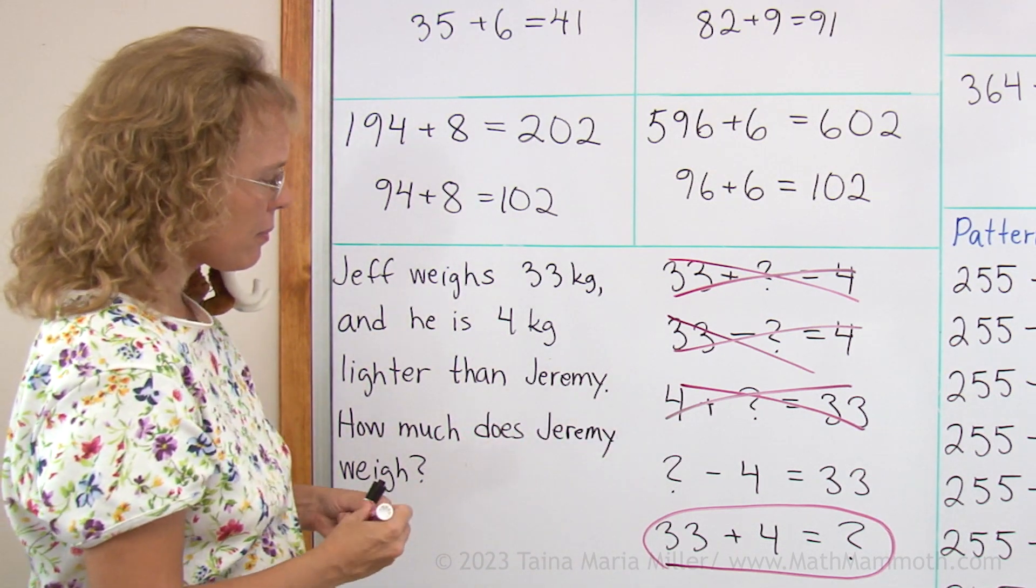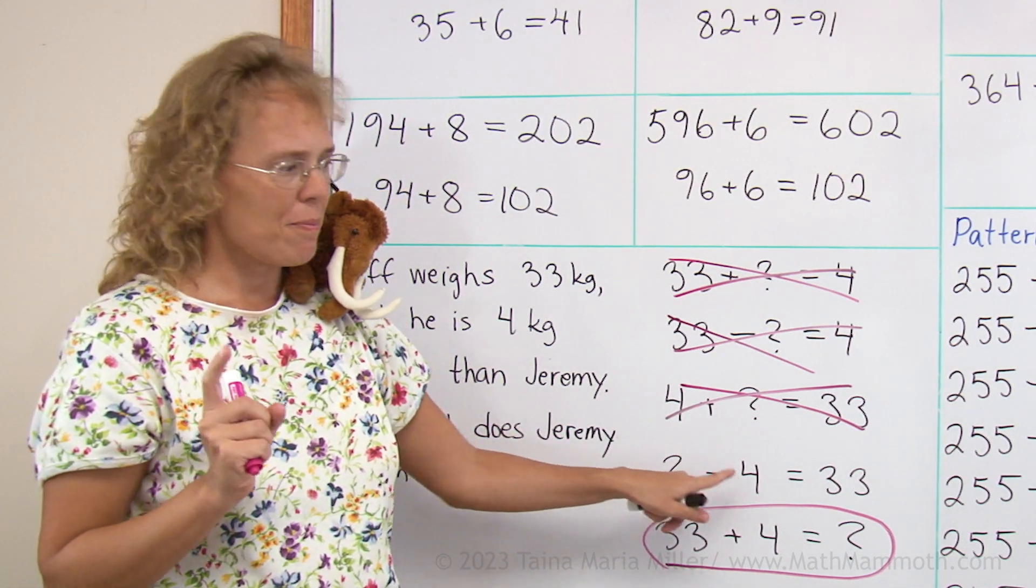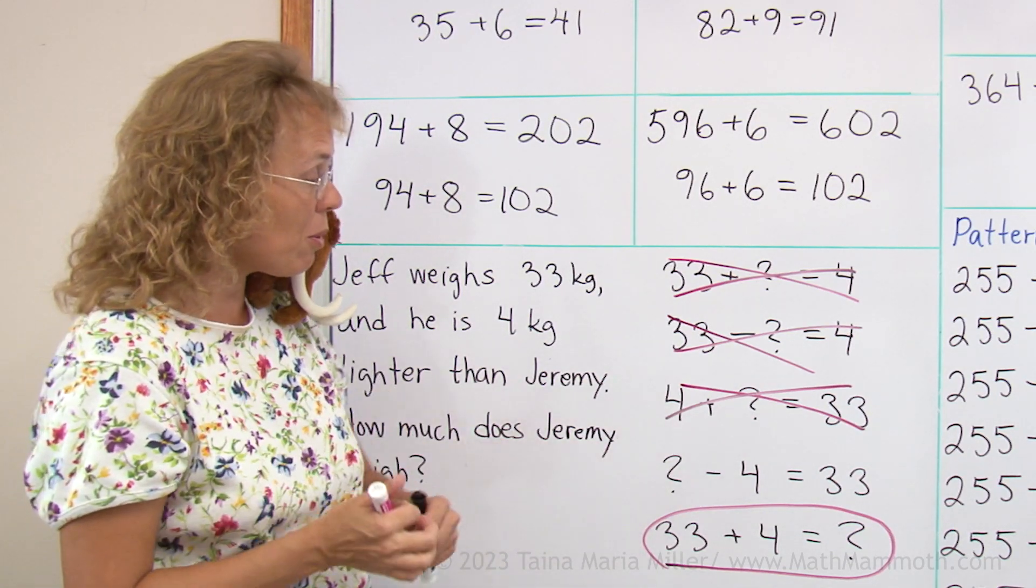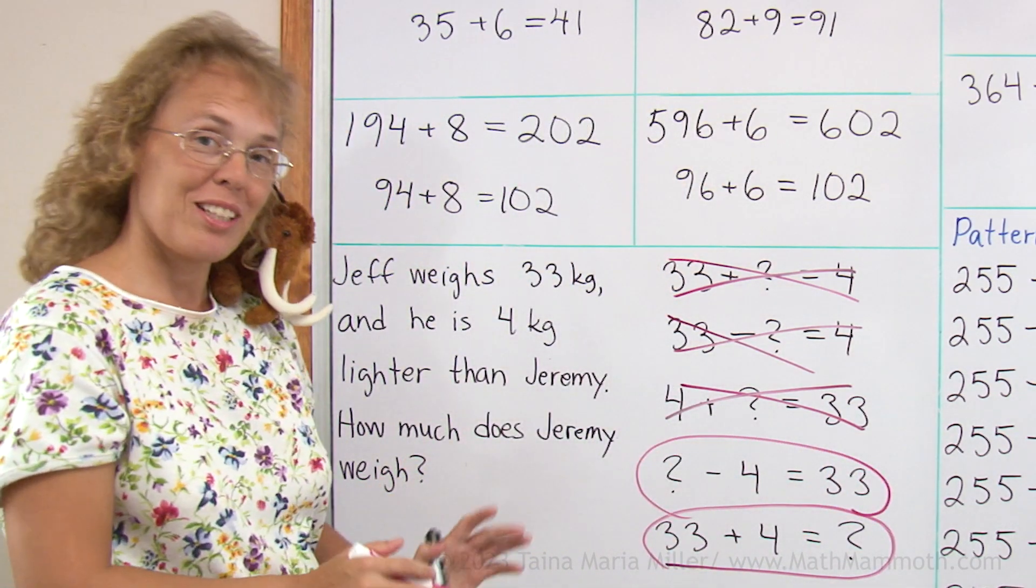Now how about this one? Some number minus 4 equals 33. 37 works here too, doesn't it? 37 minus 4 equals 33. Yep, this one works too. Alright, we got that one done.